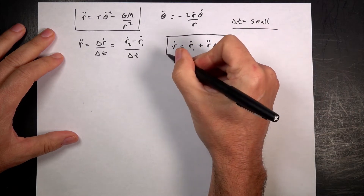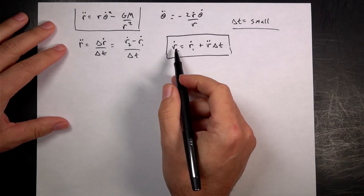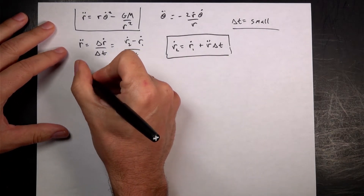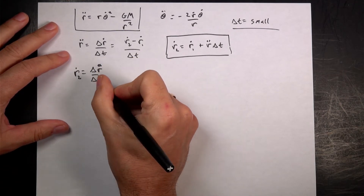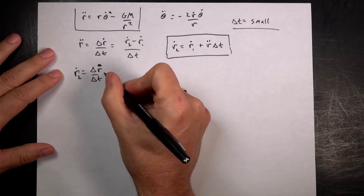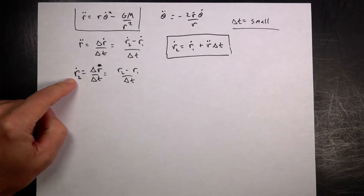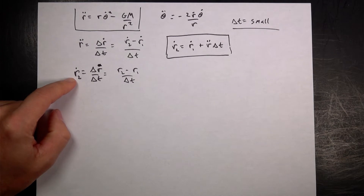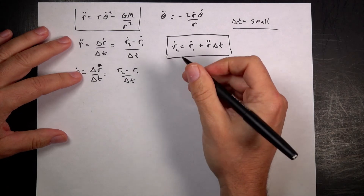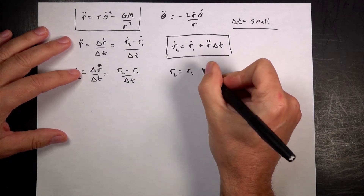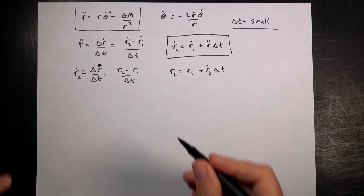Similarly, treating r-dot as approximately constant: r₂ = r₁ + r-dot₂ · delta-t. So I first compute r-double-dot, use it to get r-dot₂, then use r-dot₂ to get r₂. The same approach applies for theta: theta-dot₂ = theta-dot₁ + theta-double-dot · delta-t, and theta₂ = theta₁ + theta-dot₂ · delta-t.